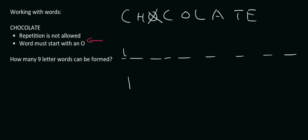Then what you do is, you look at how many letters are left. So it's 1, 2, 3, 4, 5, 6, 7, 8. So that's 8 factorial.